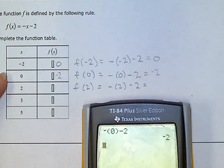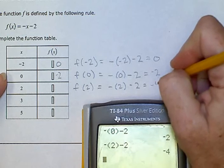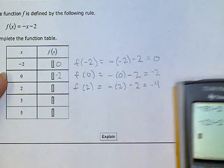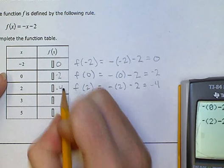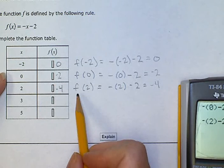Now we're putting in negative, parenthesis, 2, parenthesis, minus 2. Gives us a minus 4 for our answer. That's what goes in this box. The answer to f of 2 is negative 4.